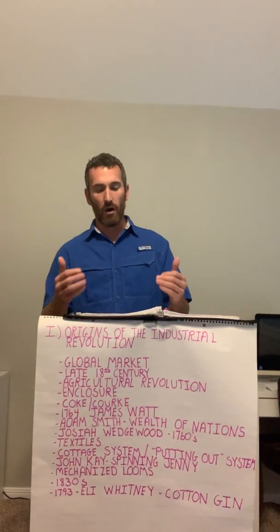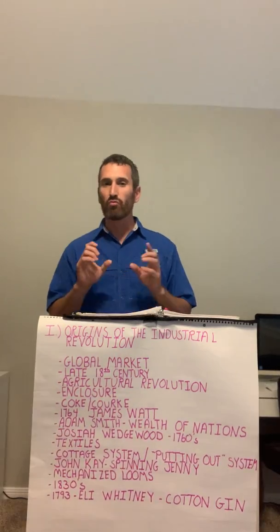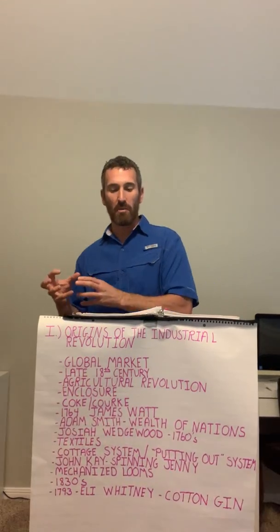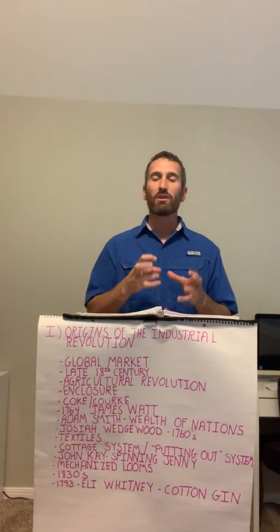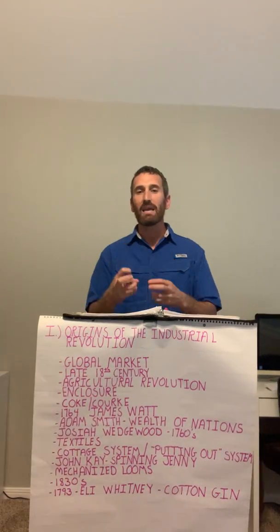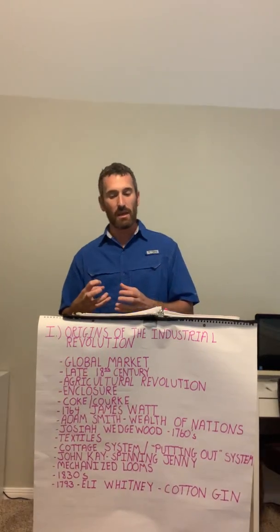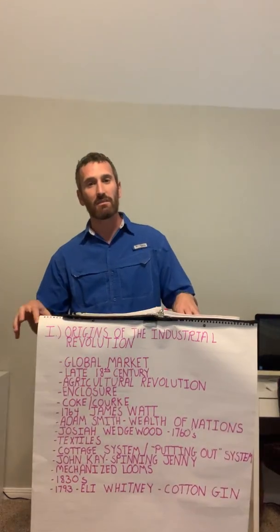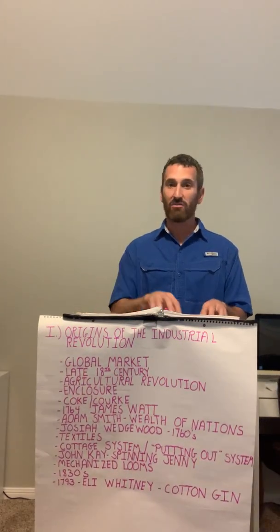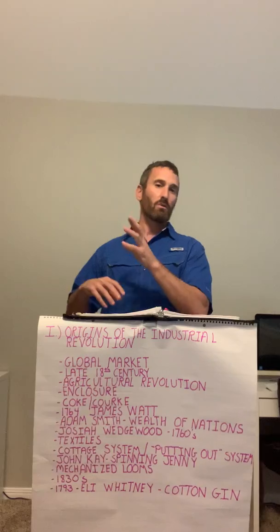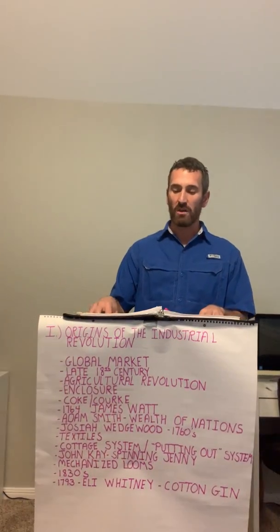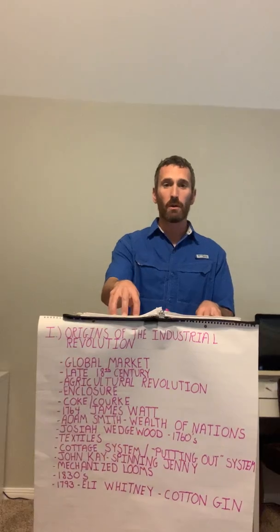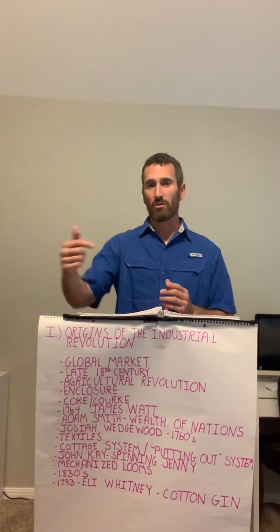The Industrial Revolution was really founded on three innovations. First, you have a new energy source — a new means of creating, harnessing, and manipulating energy. The big fossil fuel used in the late 18th and throughout the 19th century is going to be coal. Later we get petroleum and gasoline, but right now it is coal, and that is what fuels the machines.